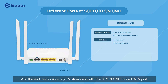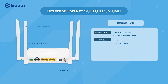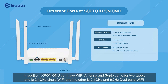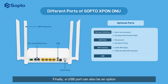End-users can enjoy TV shows as well if the X-PON ONU has a CATV port. In addition, X-PON ONU can have Wi-Fi antenna, and Sopto can offer two types: one is 2.4GHz single Wi-Fi, and the other is 2.4GHz and 5GHz dual-band Wi-Fi. Finally, a USB port can also be an option.